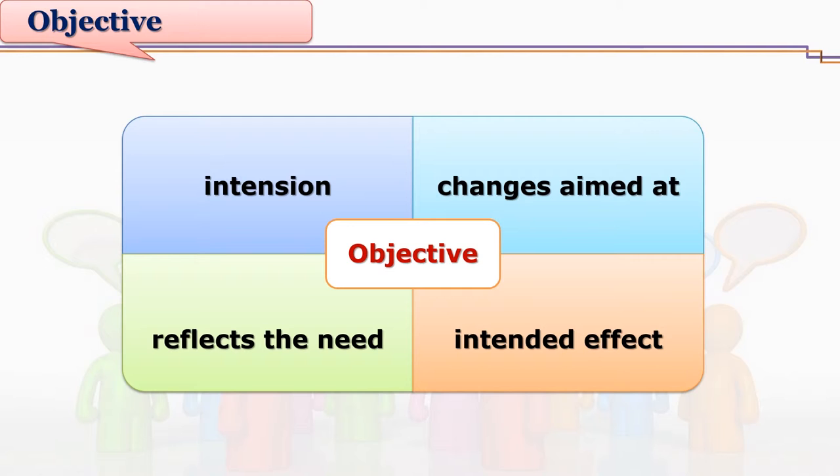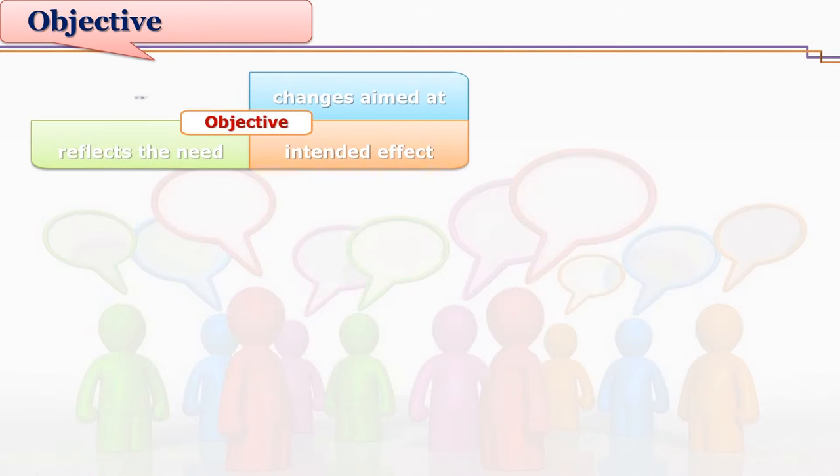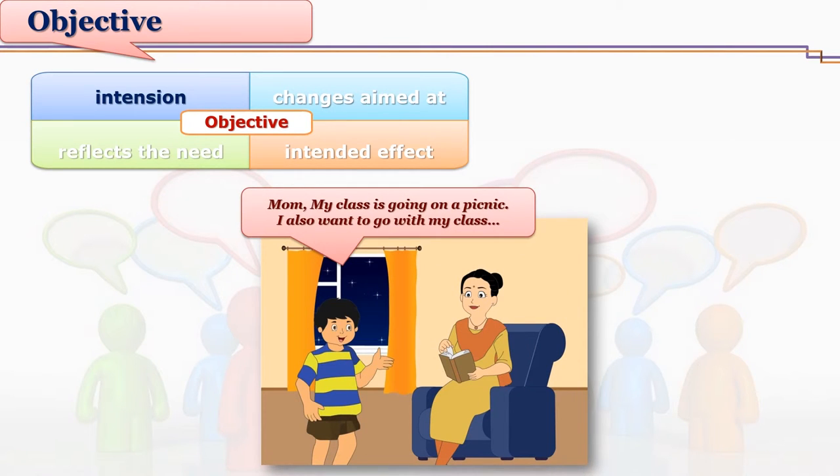Let us see how these objectives work. Let us see examples of these reasons or objectives of communication. Raga wants to seek permission of his mother for a picnic, so he starts talking with her. Here the need of initiating dialogue with his mother is the intention to seek permission. This is how, because of some intention, we start communication.